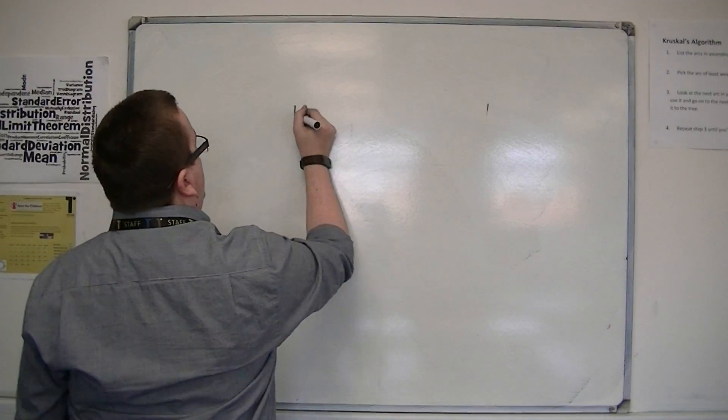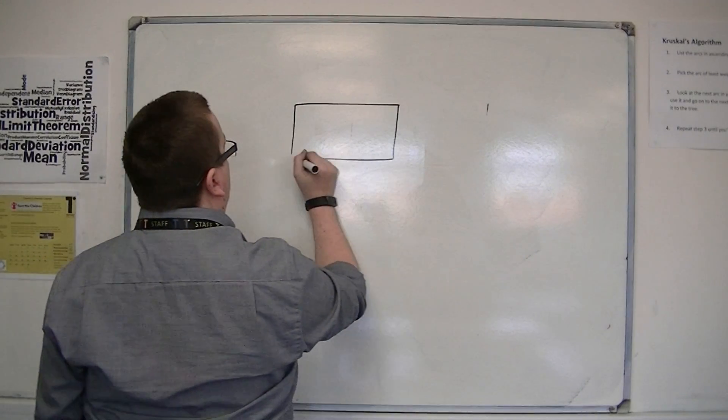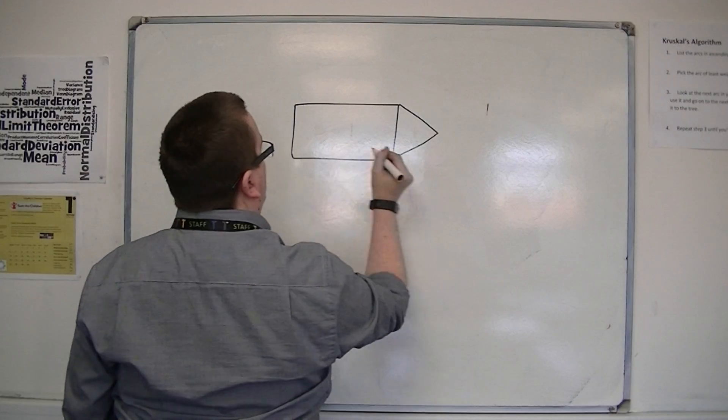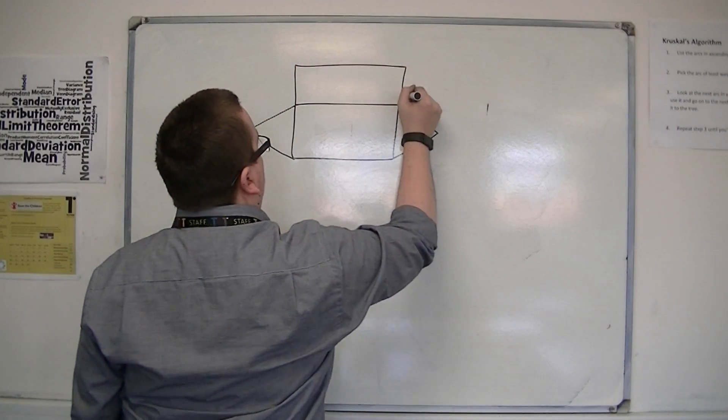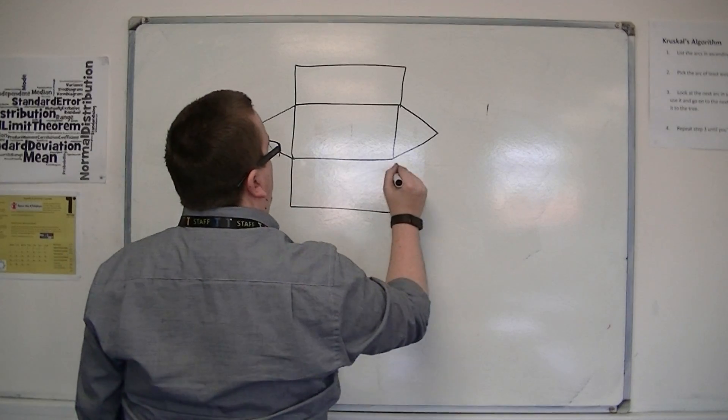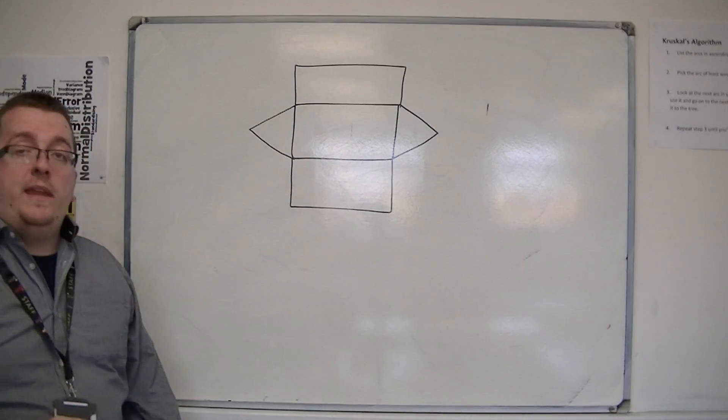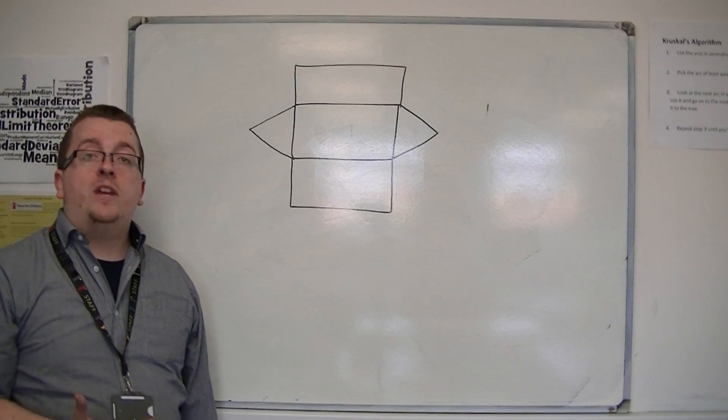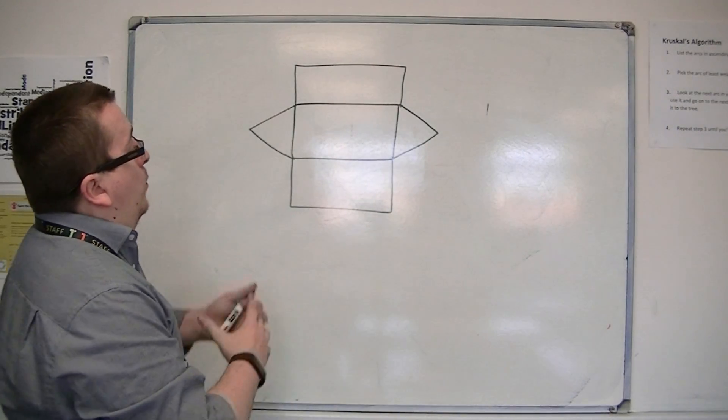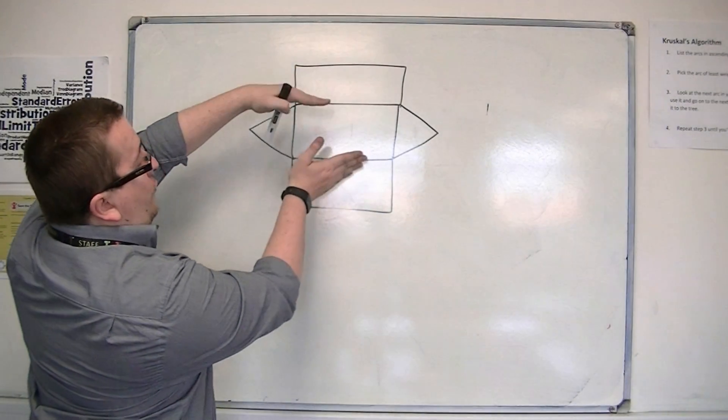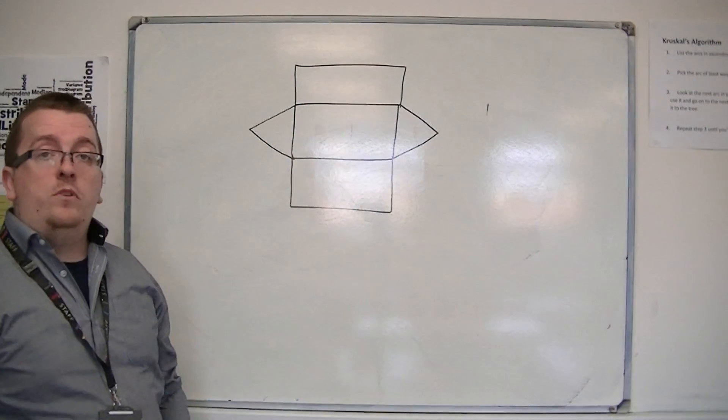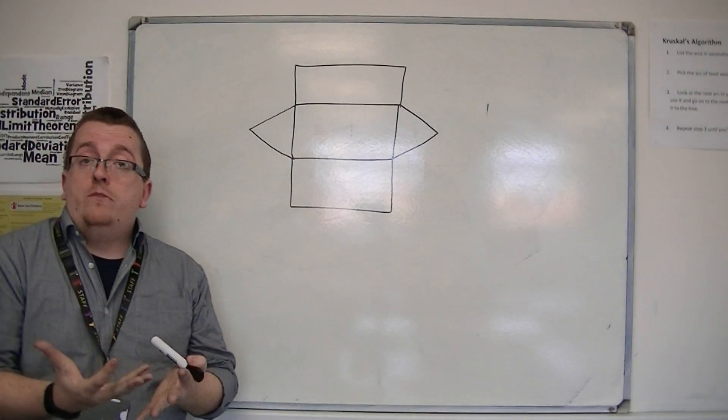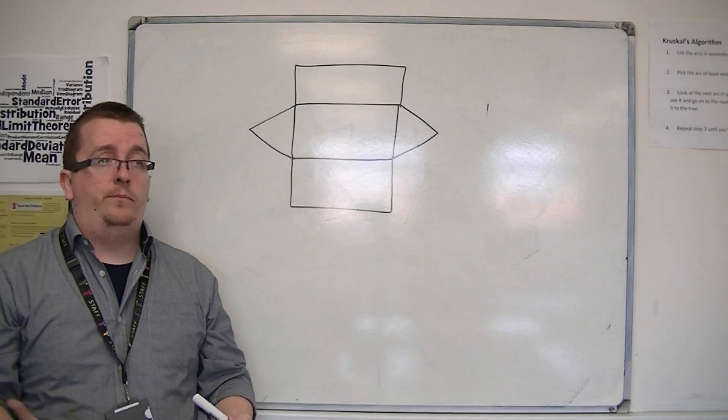You could draw a net like this. And think, well, what would that shape be? What would that three-dimensional shape be? Well, those sides would fold inwards. The two triangles would fold inwards as well. And it would make the shape of a Toblerone, which is a triangular prism.